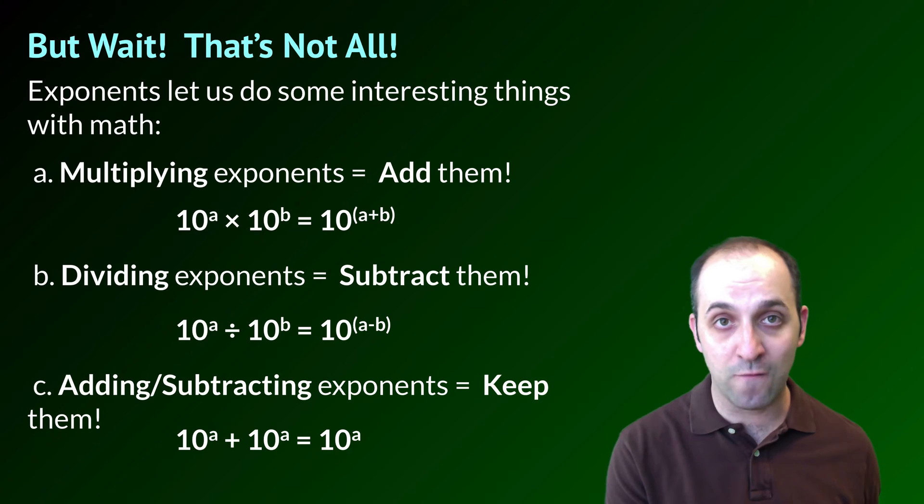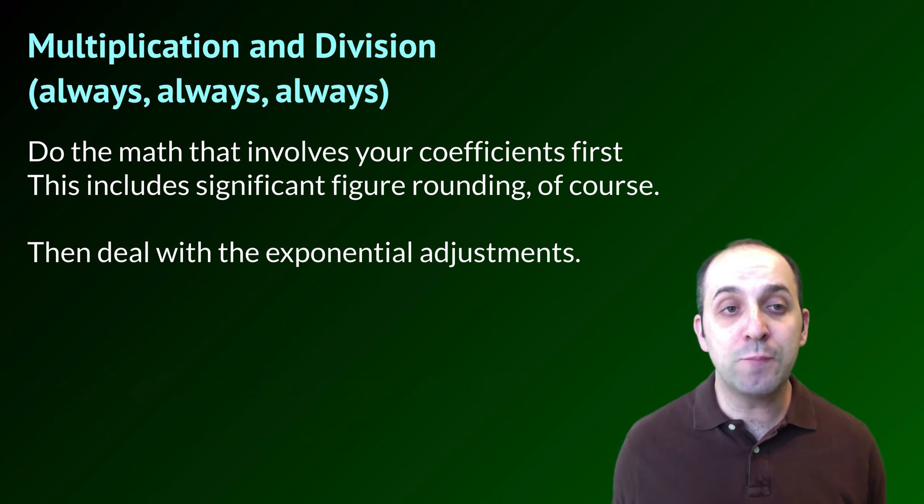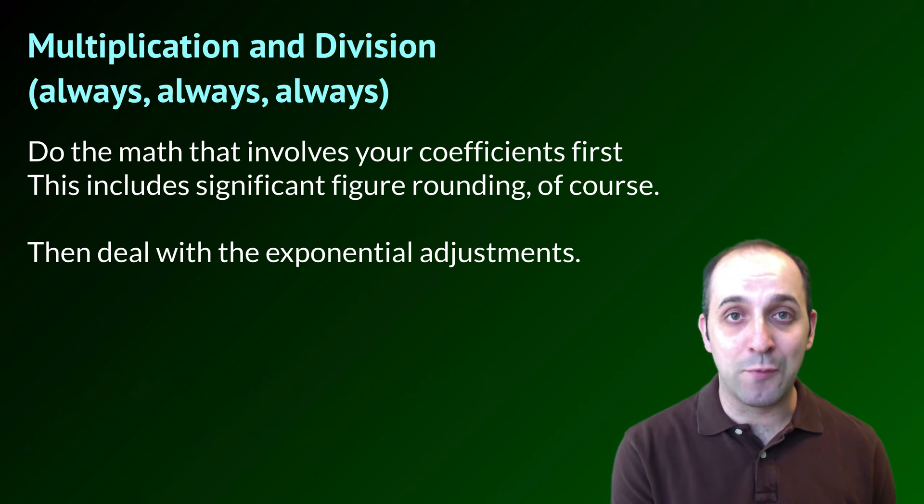Now, of course, none of this deals with the coefficients. So for the coefficients, we're still going to have to do whatever mathematical operation we need to in order to figure things out. When we multiply and divide, my advice is to deal with the coefficients first and then work on the exponents. Let's look at an example to see what I'm talking about.